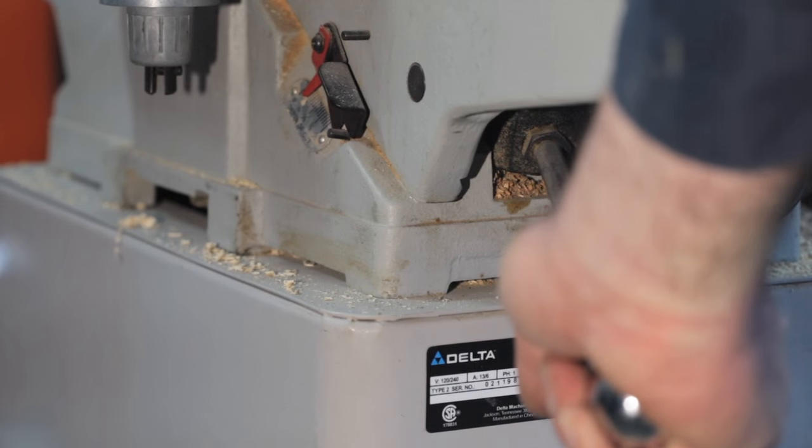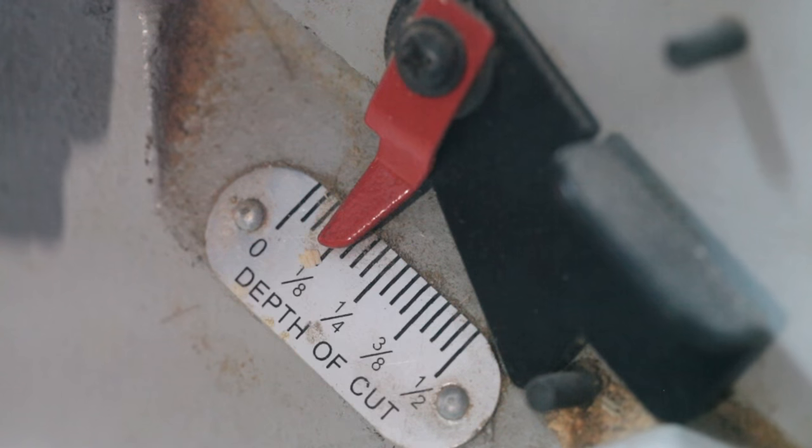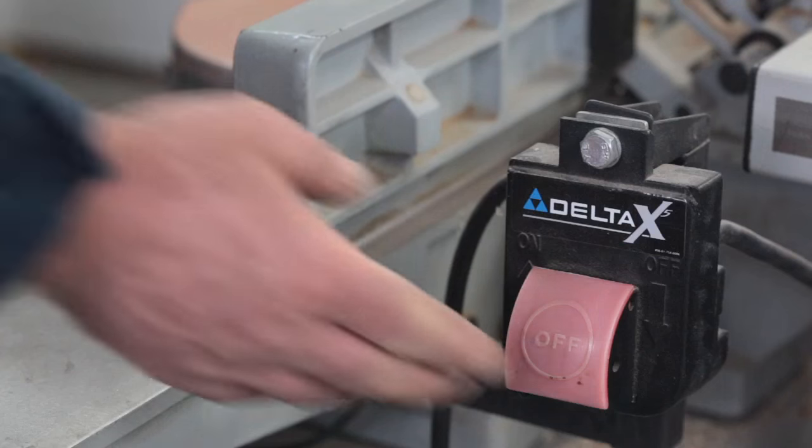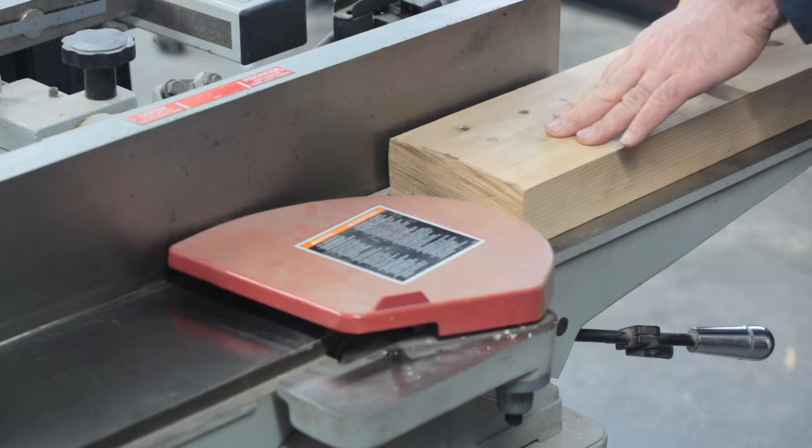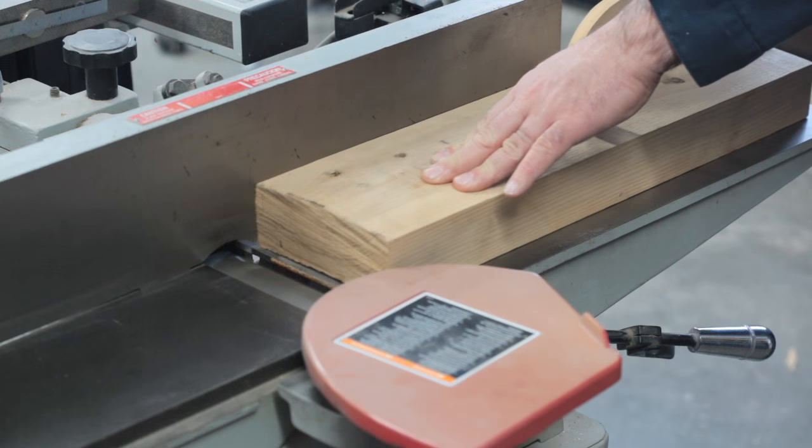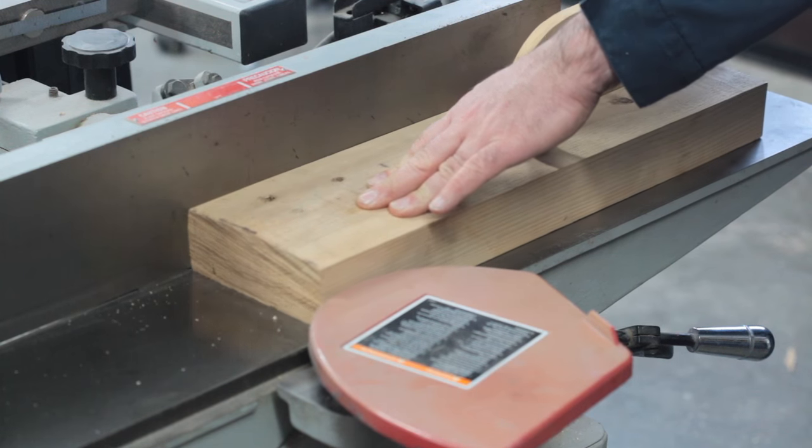You're also going to want to adjust the depth of cut. A sixteenth of an inch or an eighth of an inch is good. And then you can fire up the jointer. Push that wood across. Slow and steady. You're imposing a flat face on the formerly concave surface of the wood.